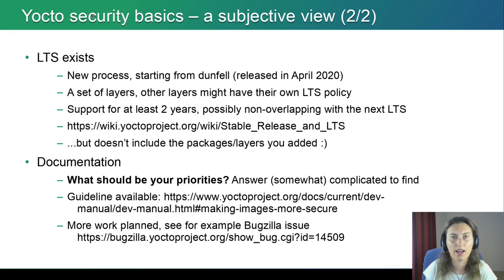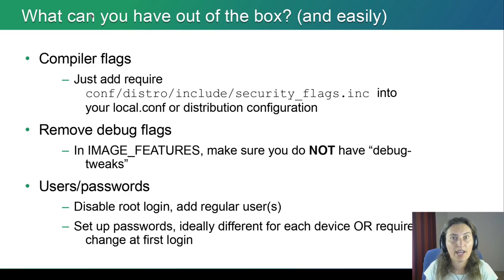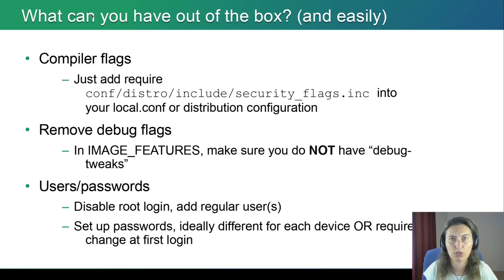If you are trying to secure a distribution using Yocto, what should you be looking at as a priority? This answer is somewhat complicated to find. There is a guideline from the Yocto project about making images more secure with helpful suggestions, and there is more work planned. There is a link to a Bugzilla issue about this subject. What you have out of the box in Yocto includes compiler flags — you just add one include of security flags into your local config or distro configuration.